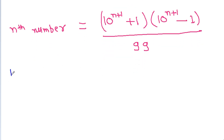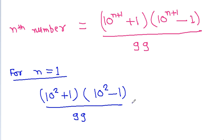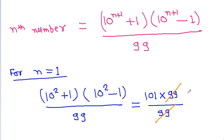If we check for n equals 1, we get (10 squared plus 1) times (10 squared minus 1) divided by 99. That is 101 times 99 divided by 99. The 99s cancel and we get 101, which is a prime number.